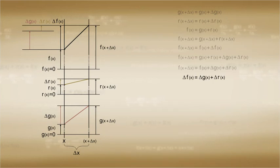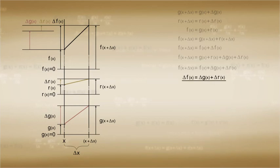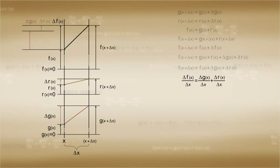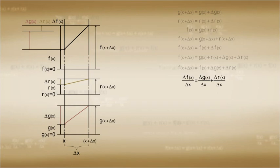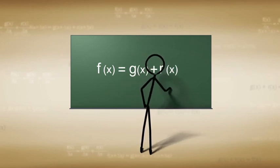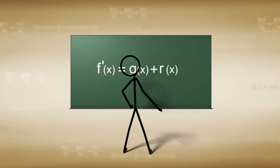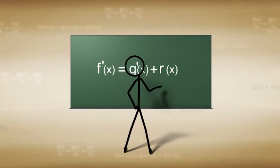Since the derivative compares the change in the function to the change in x values, we can divide both sides of the previous equation by delta x in order to get the rate of change. And we have delta f of x over delta x equal to delta g of x over delta x plus delta r of x over delta x. If we make the change of x really small, then we get the relationship of the derivatives: if f of x is equal to g of x plus r of x, then f prime of x is equal to g prime of x plus r prime of x.